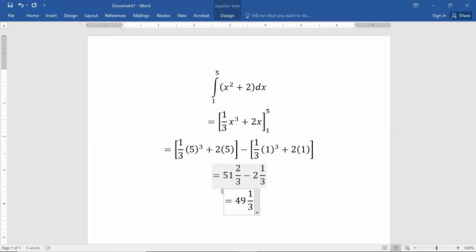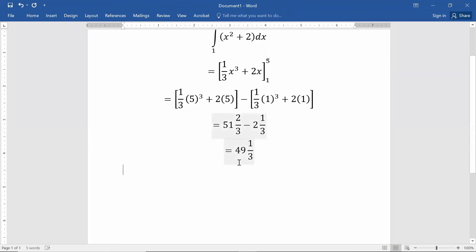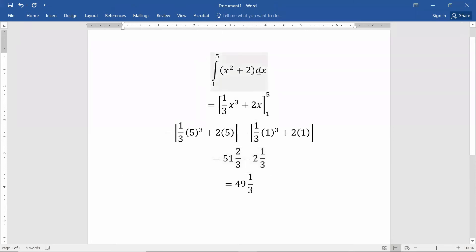In Moodle, it will ask you to round your answers to two decimal places likely. So, most of the time, you can just utilize your calculator, turn that fraction into a decimal, or you can also turn that fraction into an improper fraction using your calculator. But 49 and one third is the area underneath x squared plus two from one to five.